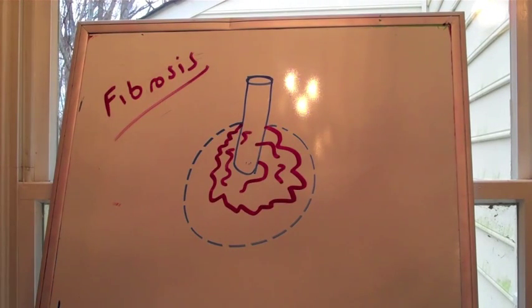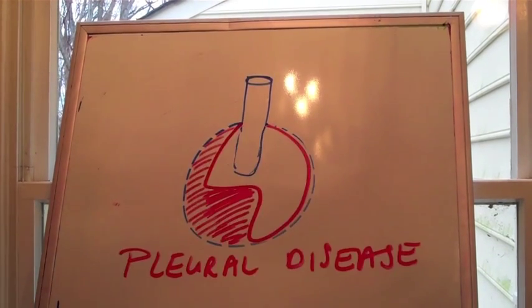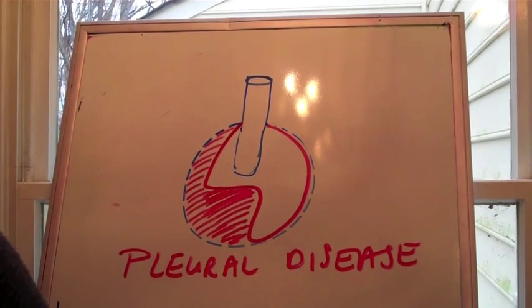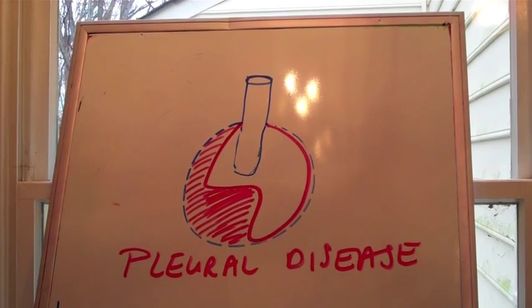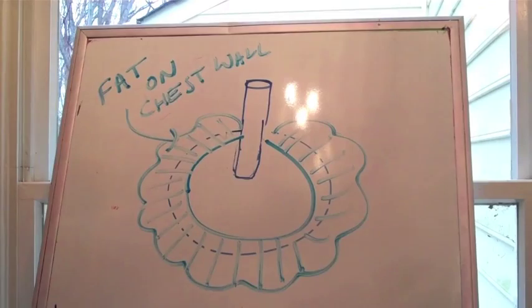All right. Here's some examples. Fibrosis. The lungs are really scarred and just tiny, shrunken down from different diseases. You could have a pleural effusion or a pleural thickening that affects your lung volumes, as you can see here.